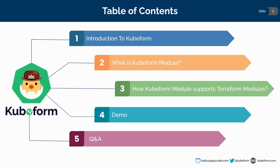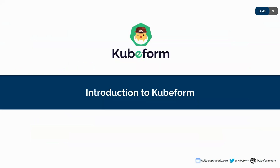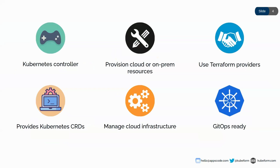QForm by AppsCode is a Kubernetes controller for provisioning and managing cloud or on-prem resources using Terraform providers. QForm provides Kubernetes CRDs for Terraform resources so that you can manage any cloud infrastructure in Kubernetes anywhere. QForm is built on Terraform, so you can rely on QForm as much as you rely on Terraform — a very mature technology. You just write a CRD for your cloud infrastructure, apply it, and QForm will manage your infrastructure accordingly.